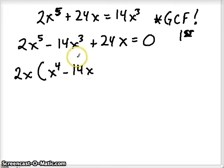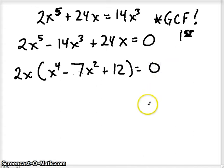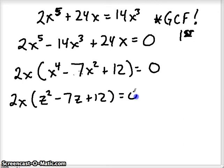So if I take that out of each term or divide each term by the greatest common factor, what's left over? This would be x to the 4th. This would be minus 7x squared, and plus 12. If I distribute my 2x, I should get back to where I started. Always check yourself as you're going. Now I have something that kind of looks like a quadratic. I could probably change it pretty easily. So I'm going to keep that 2x on the outside. And I'm going to use z. So x to the 4th would be z squared. 7x squared would be 7z, and we still have positive 12.